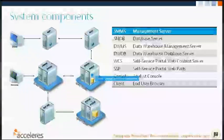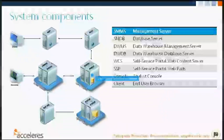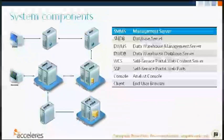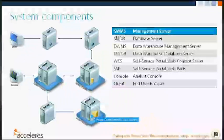The Service Manager database server hosts the Service Manager operational database — this is where the CMDB resides. All operational data, configuration items, and work items for their data retention period reside there. We also have the data warehouse management server, which takes data from the Service Manager database and moves it through a series of databases until it ends in the DW data mart, which stores data for long-term reporting accessible through SSRS or Analysis Services.